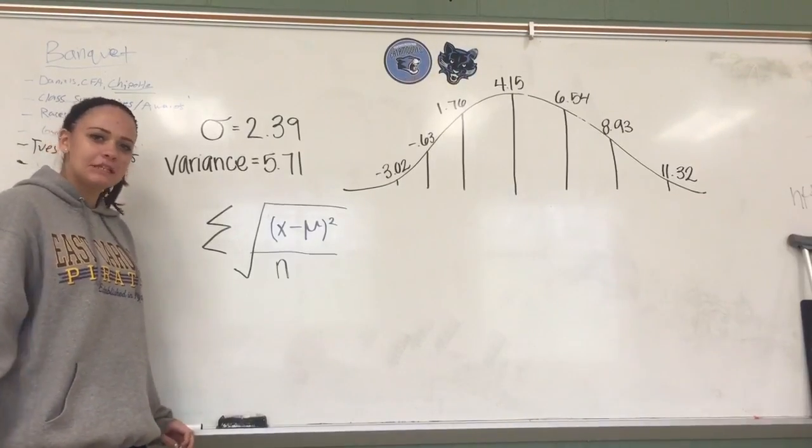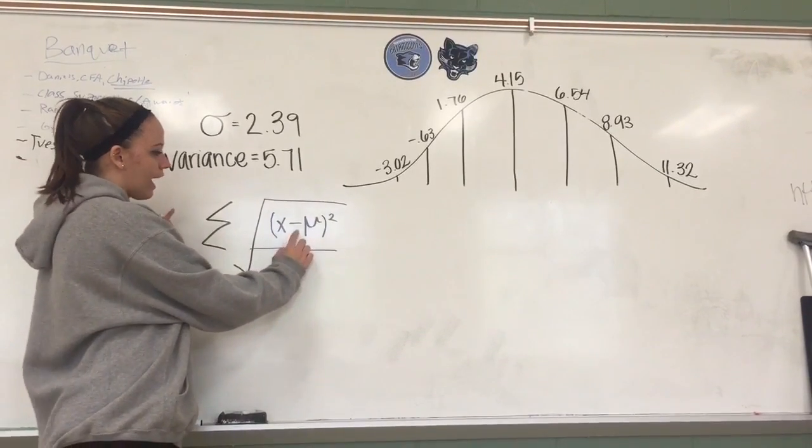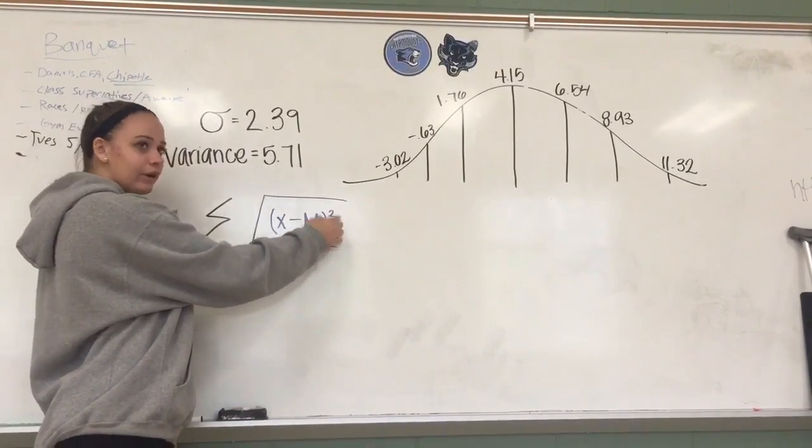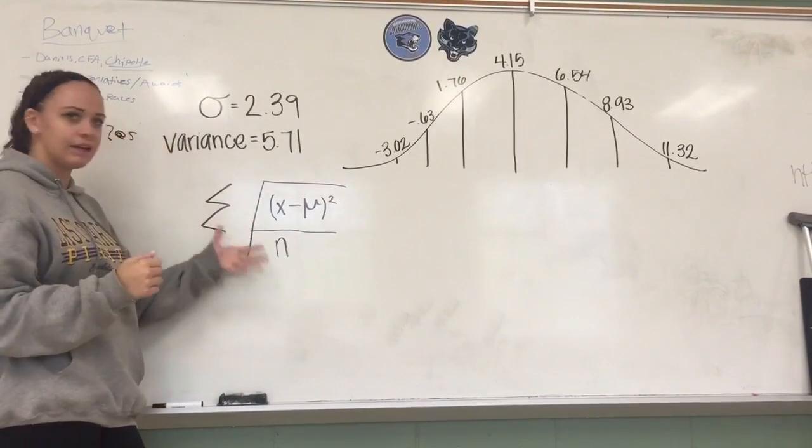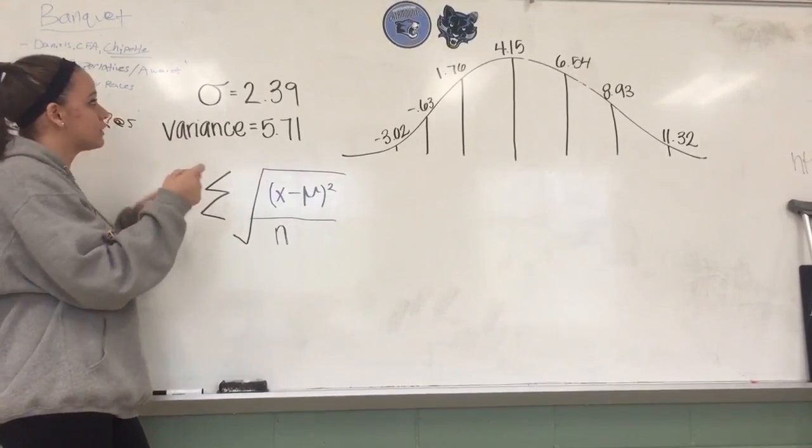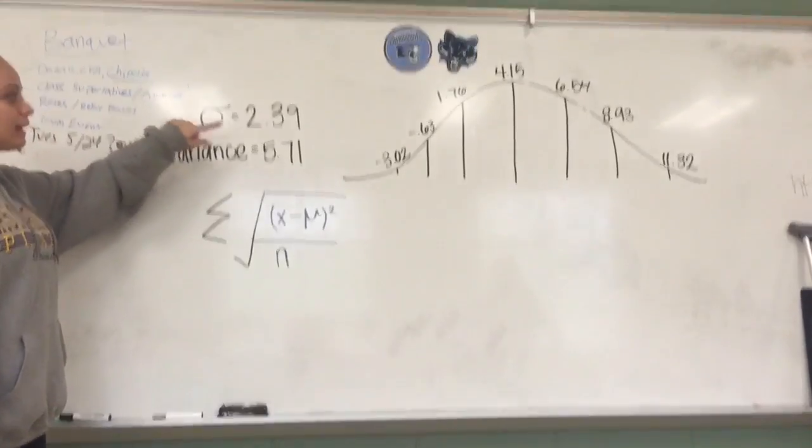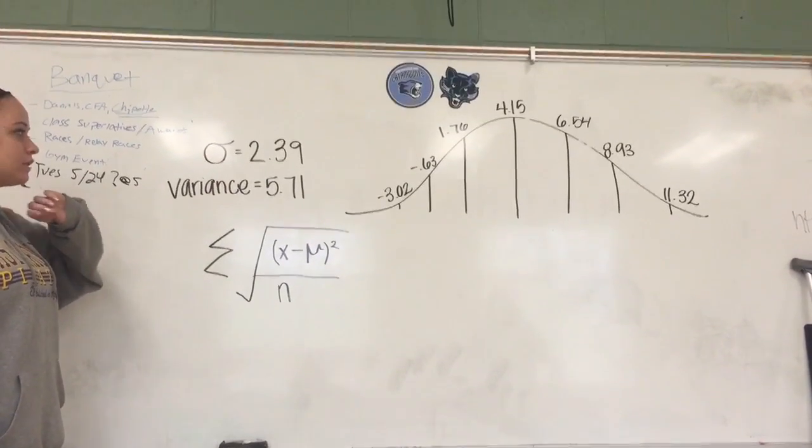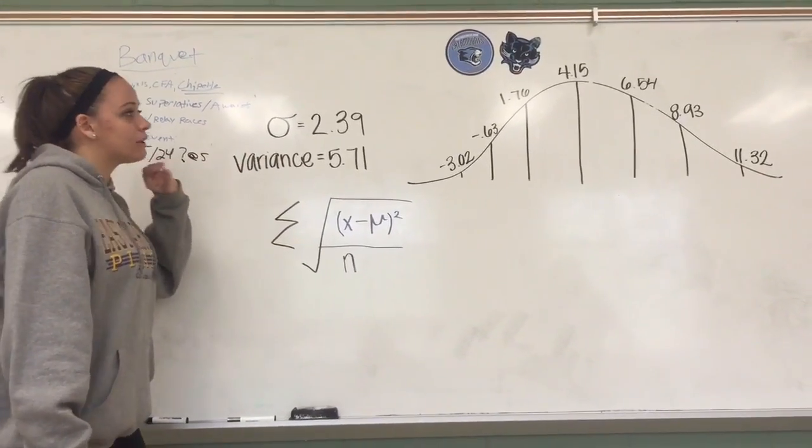So I'm here to explain standard deviation. This is the formula to find it. It's the sigma, so you add all of the x minus the mean in square, add all of those up, divide it by n, which is the number of data points that we have, then take the square root of all of that. So that's how you find standard deviation. This is going to be the sign for standard deviation, and with all of our data, we got 2.39 as our standard deviation. 5.71 is the variance, so that's basically just the standard deviation squared.